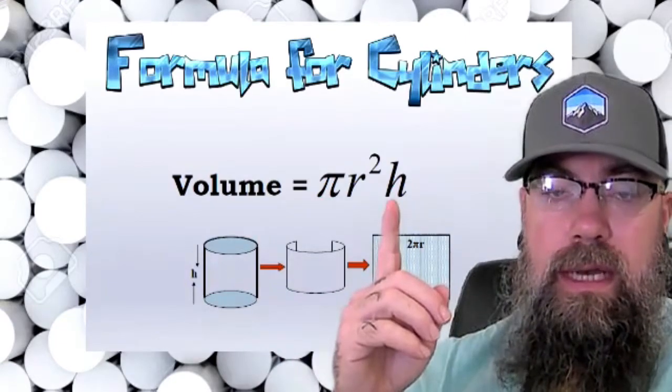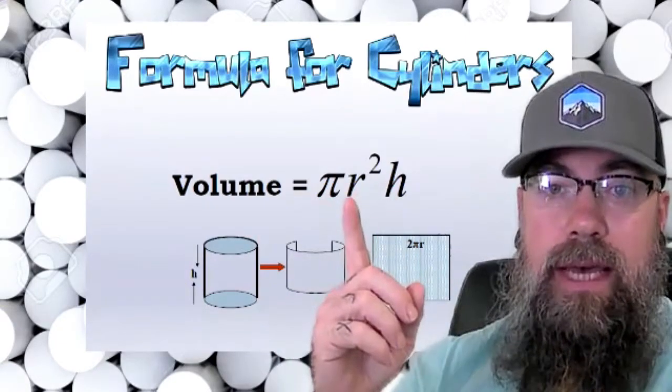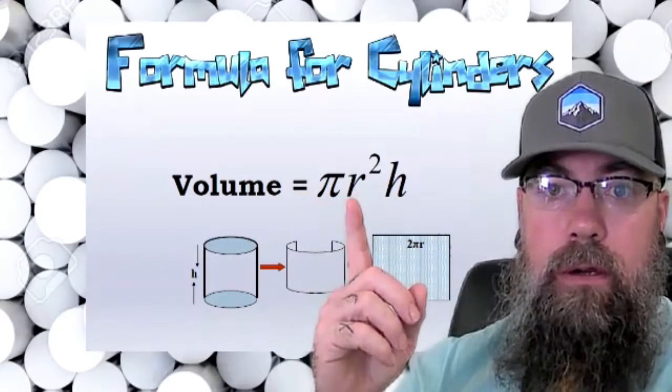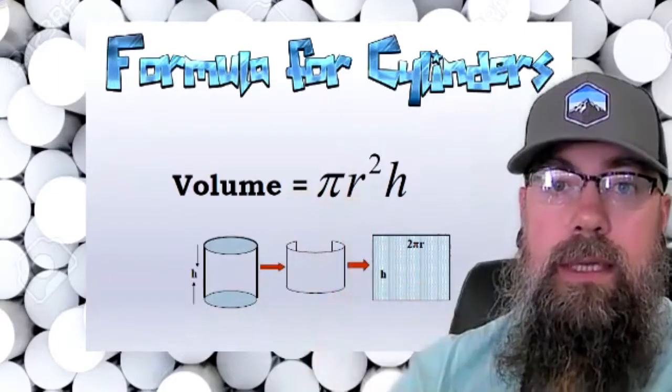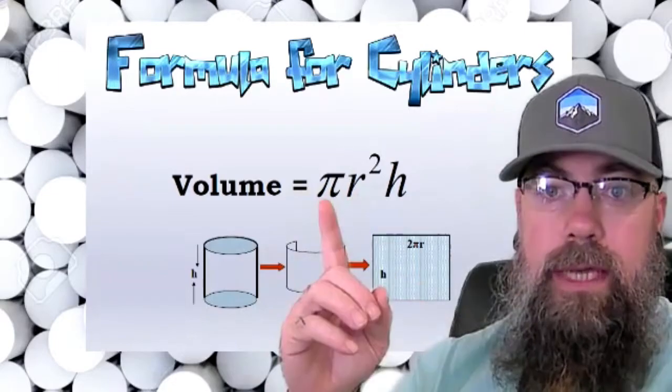Let's look at the parts. One of the parts is the height of the cylinder. We're going to multiply that times the radius of the circle squared. The radius of the circle is halfway across the diameter.